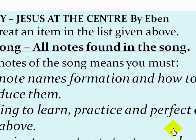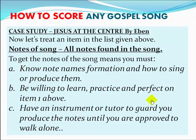All notes found in the song can be seen as the notes of the song: Do Re Mi Fa Sol La Ti Do — Do Re Mi Fa Sol La Ti Do. Then we have chromatic extensions: De Do De Re Re Mi Fa Fi Sol La Li Ti Do. Going from low to high and from high to low each has its own way of being sung. To get the notes of the song, you must know note names, their formation, and how to produce them. You need to be willing to learn, practice, and perfect them — otherwise you'll have challenges such as accidentally changing key.